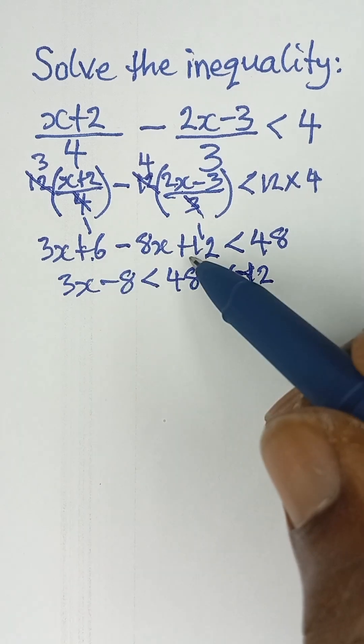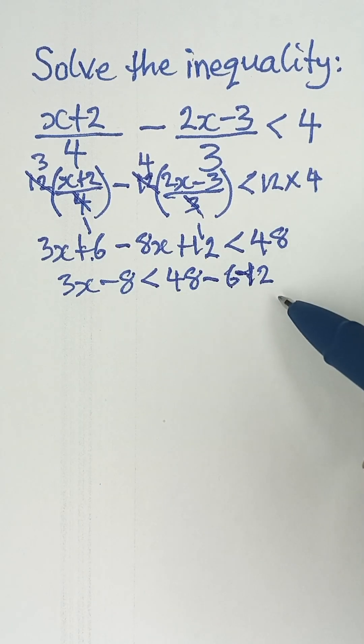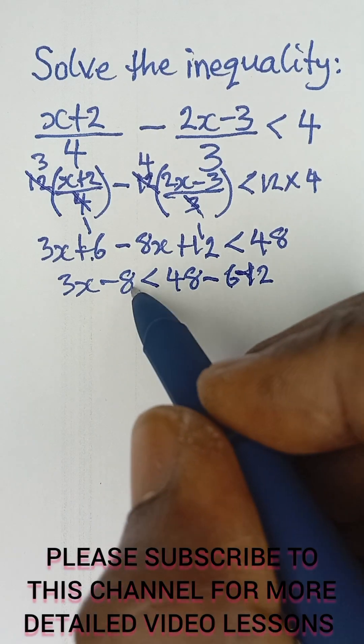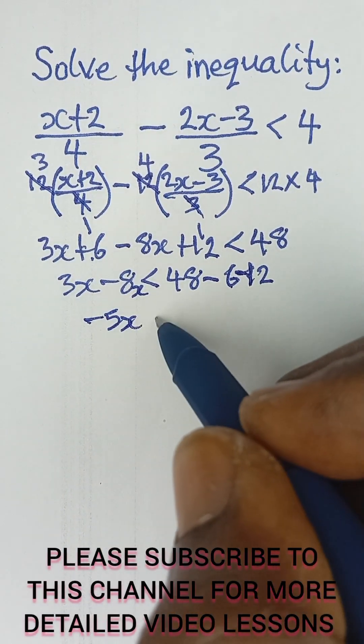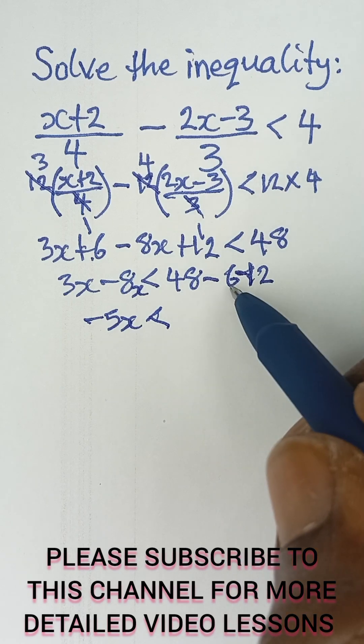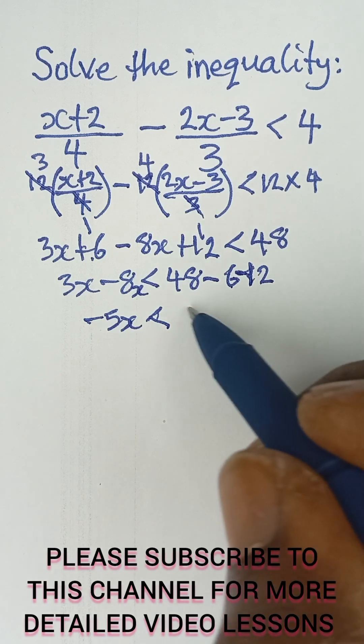So I have 3x - 8x is less than 48 - 6 and then - 12. Don't forget this positive 6 and this positive 12 when they come to this side they become -6 and -12. So don't forget this is 8x, so that will give us -5x and it's less than 48 - 6 is 42. 42 - 12 is 30.